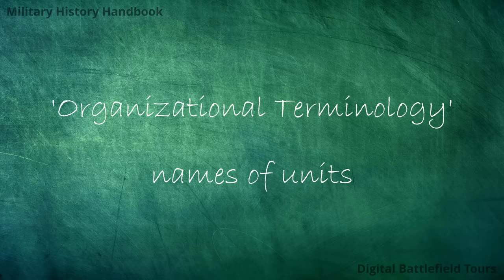You will need to be able to tell apart a battalion from a brigade, need to know what is meant by a company action, and have a good understanding of how these different units fit together in their chain of command — which one is subordinate to the other. This episode of the military history handbook will explain army organization, the names of the different units, and their chain of command.